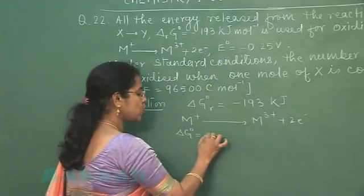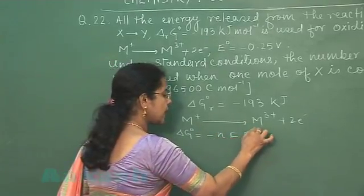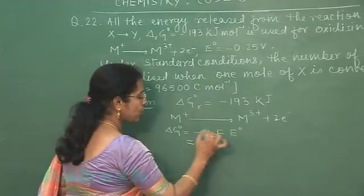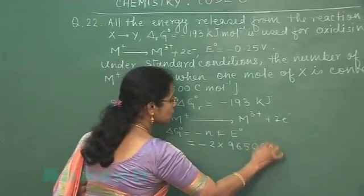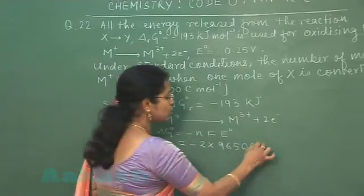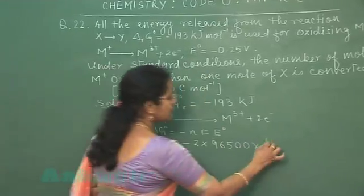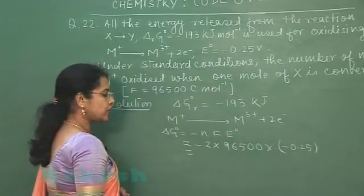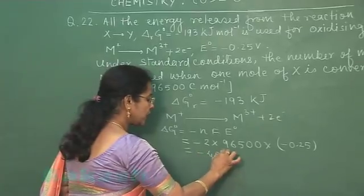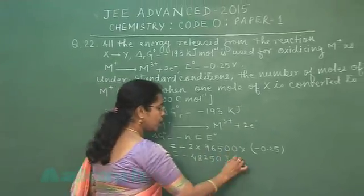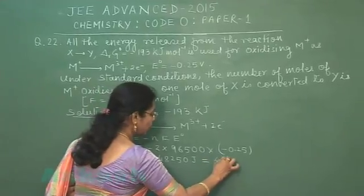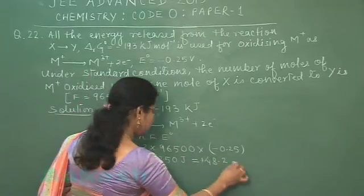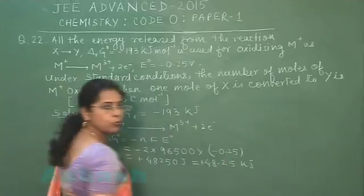Delta G0 for this oxidation reaction is minus nFE0. Now, in this question, the value of n is 2, F is always 96500 coulomb, and electrode potential of this reaction is given minus 0.25 volt. If we multiply this quantity, the answer is coming 48.25 kilojoule per mole.